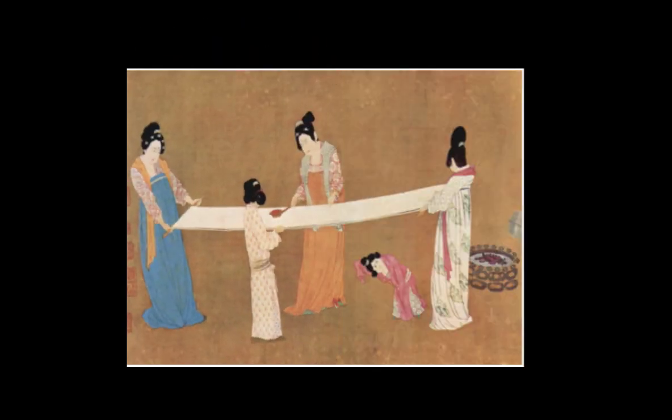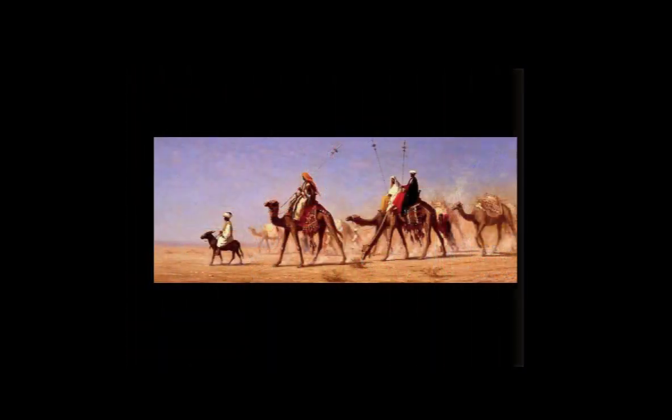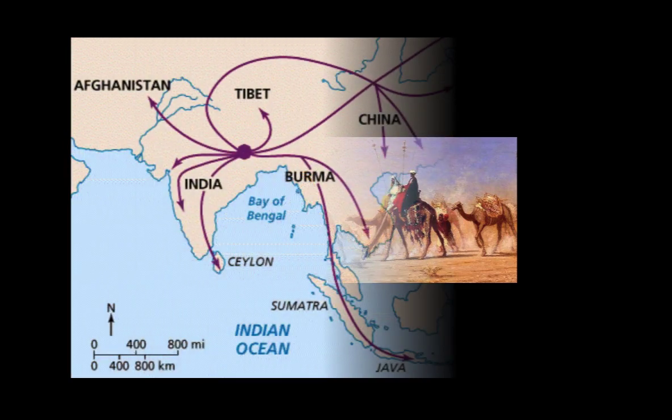Once people start to move, trade, and interact, relationships begin to change. The farming of mulberry trees was done by Chinese women, strengthening their new role and status in the public sphere. Merchants, too, saw their status rise — throughout most of history they were looked down upon as selfish, but increased trade in the Middle East made merchants seen as necessary to the growth of societies.